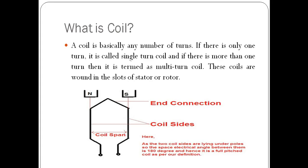First of all, we will understand what is a coil. A coil is basically any number of turns. If there is only one turn then it is called a single-turn coil, and if there is more than one turn then it is termed as a multi-turn coil. These coils are wound in the slots of the stator or rotor.